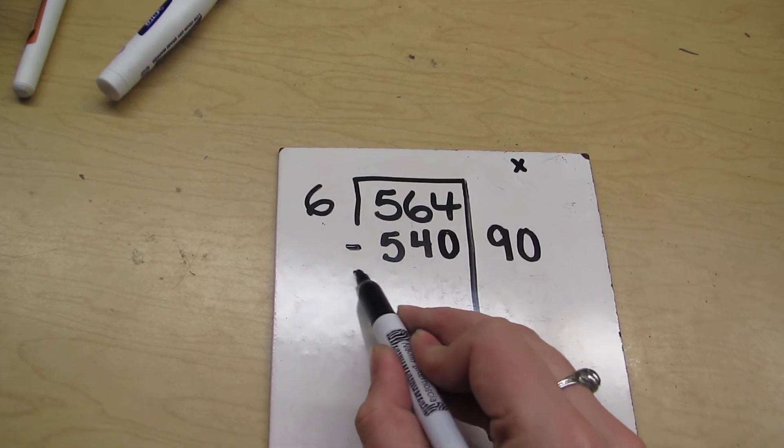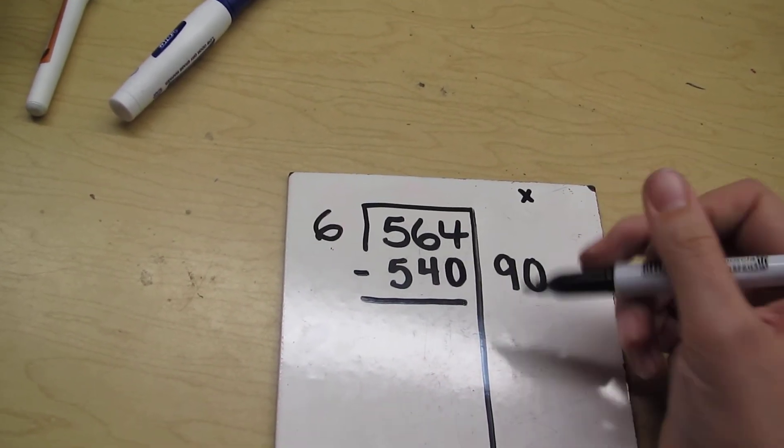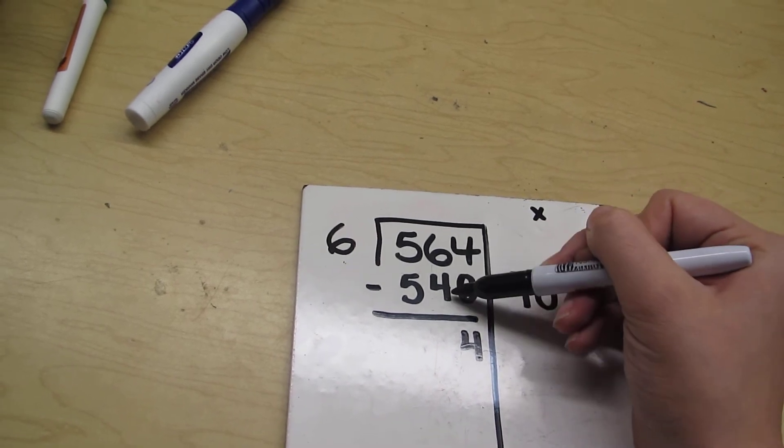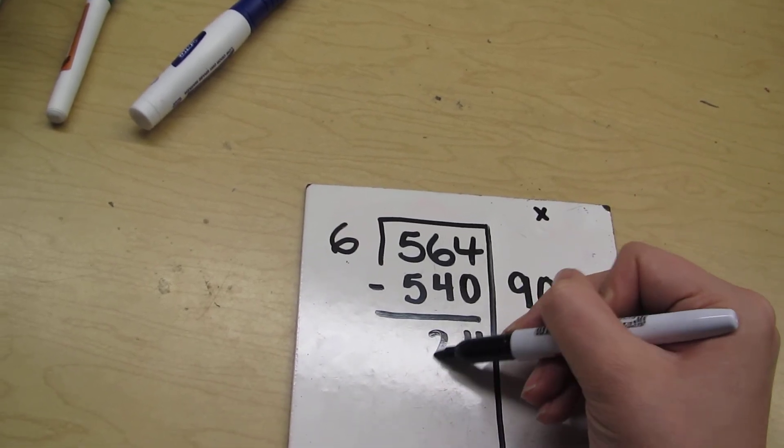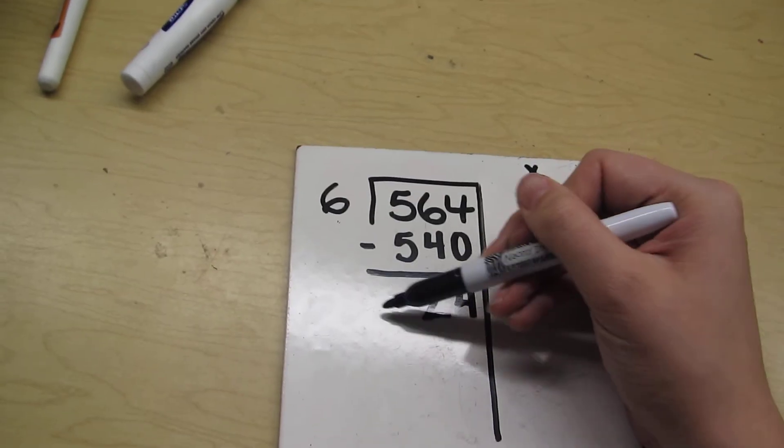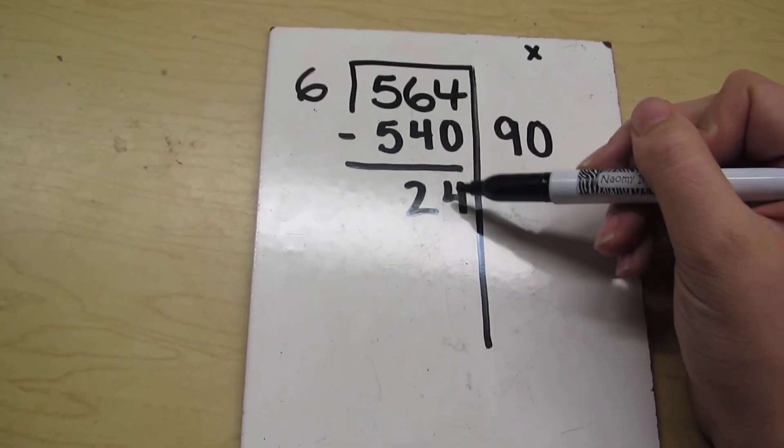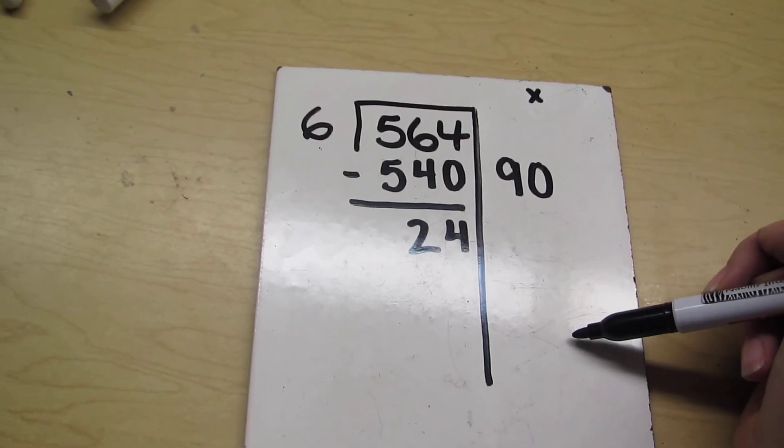I'm going to do my subtraction now. 4 minus 0 is 4, 6 minus 4 is 2, and 5 minus 5 is 0. I'm not going to put the zero there because I know it's zero. I'm working with the number 24.